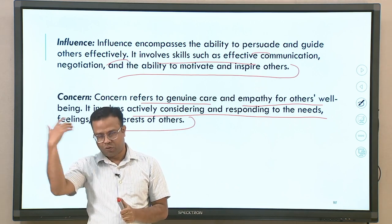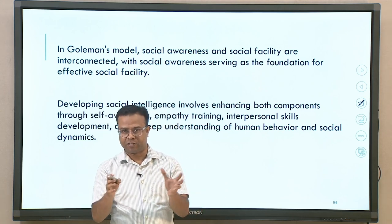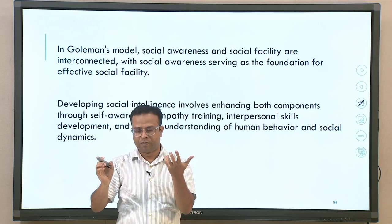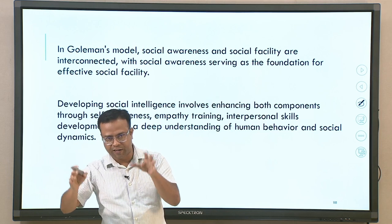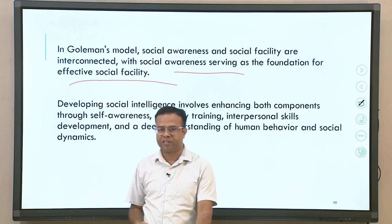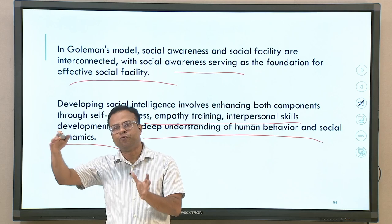Social awareness and social facility are both very important and interconnected parts of social intelligence. Without awareness, social facility and action cannot be appropriate — the right action comes from right awareness. Developing social intelligence involves enhancing all components: self-awareness, empathy, interpersonal skills, and deeper understanding of human behavior and dynamics. The more we develop them, the more socially intelligent we become.